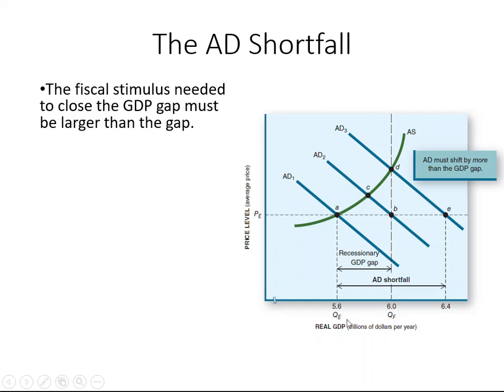So we need to ask: how large a shift? Definitely not just 400 billion in this case. A rightward shift of aggregate demand equal to the GDP gap will leave the economy short of full employment. When you shift the AD curve, the price level goes up, and the market adjusts by producing less. That is why giving only 400 billion will not achieve our macro goals.